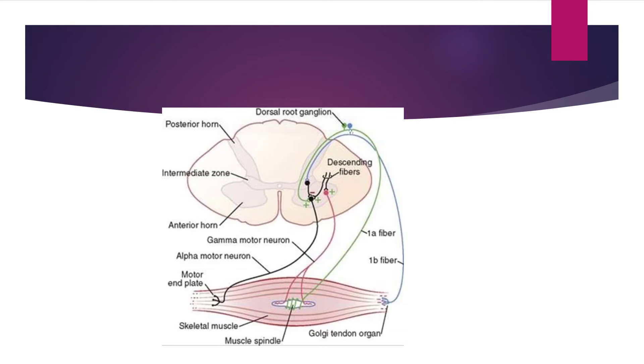Now what we need to understand here is the continuous steady state of discharge going along the gamma motor neurons to the muscle spindle. As a result, muscle spindle always remains in a steady state of tension.